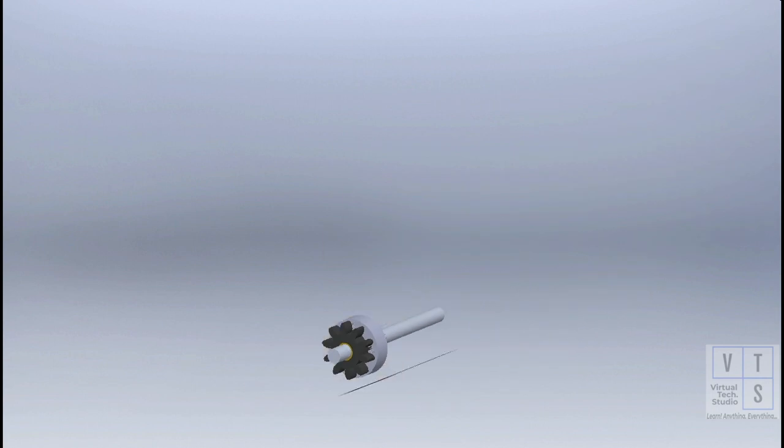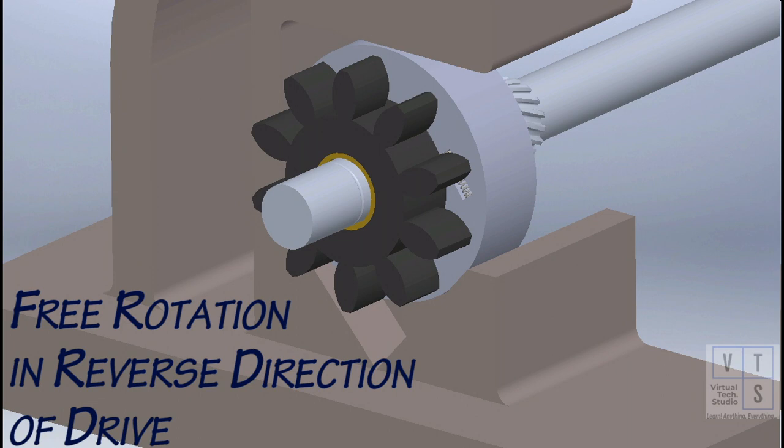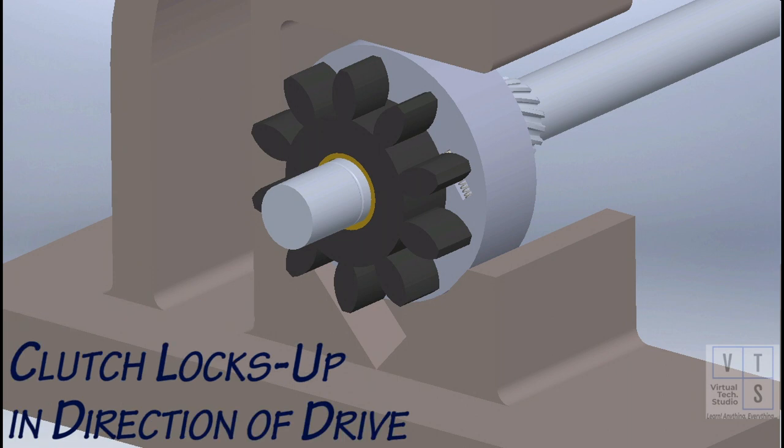Hold the outer race of overrunning clutch and rotate the pinion in reverse direction of drive. The pinion should rotate smoothly in reverse direction. Now, when pinion is rotated in the direction of drive, it should lock up.